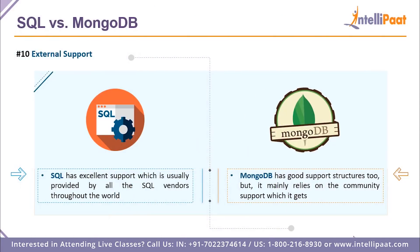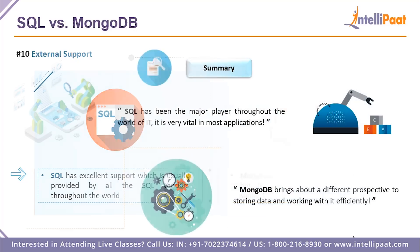Point ten is external support. SQL has excellent support because it has been around for a long time, and many vendors provide support for it. Since the multiple flavors of SQL are about 70 to 80 percent the same, knowing one flavor makes it easy to learn another. MongoDB has good support too, primarily relying on community support. The community's growth, guidelines, and help for users is what makes MongoDB what it is today.